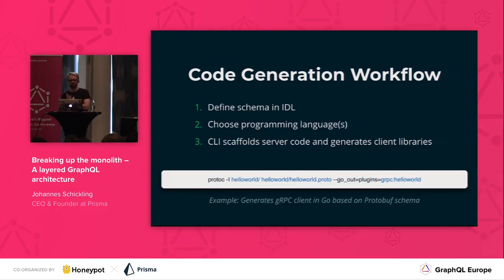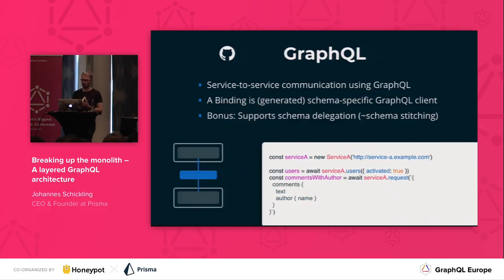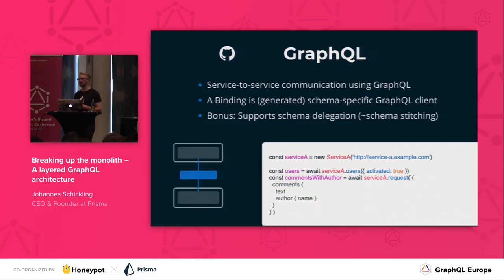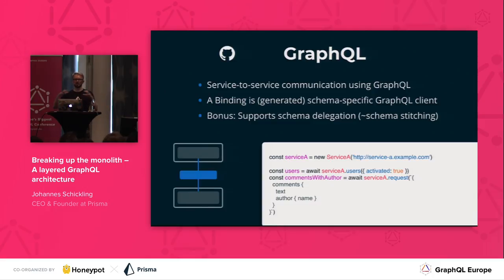So what does all of that have to do with GraphQL? We are still at a GraphQL conference. The interesting idea is that we already have schema definition and code generation in GraphQL. So you can actually use GraphQL for service-to-service communication, especially with GraphQL bindings. A binding — if you're not familiar with it — is basically a generated schema-specific GraphQL client that you can use to talk to other GraphQL services. The coolest part is that you can also use schema delegation or schema stitching under the hood, which allows you to build layered GraphQL APIs.